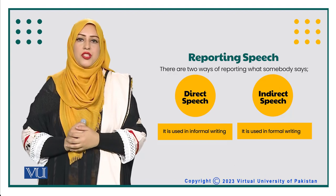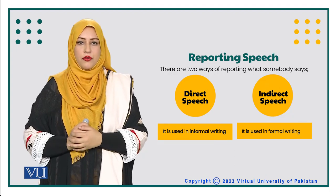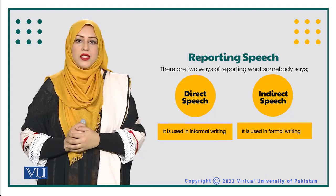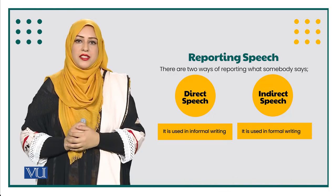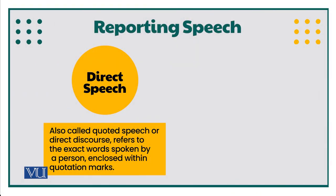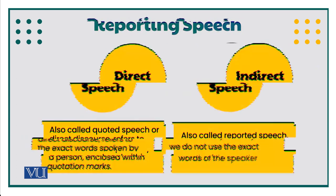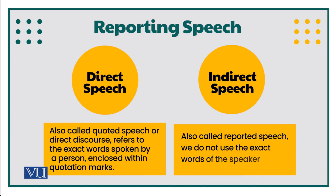We use direct speech when we are writing informally, and we use indirect speech when we have to write formally. Direct speech is also known as quoted speech or direct discourse — it is to use somebody's exact words under the quotation marks. On the other hand, indirect speech is known as reported speech and we do not use somebody's exact words.